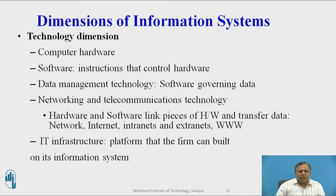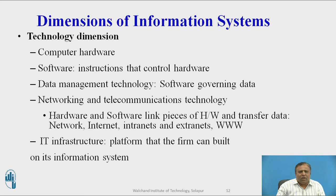The technology dimension includes: computer hardware — physical equipment used in input, processing, and output activities; software — instructions that control hardware; data management technology — software governing data; networking and telecommunication technology — hardware and software that transport data; and networks including the internet, intranets, extranets, and the worldwide web. Information technology infrastructure is the platform the firm builds its information systems on. Computer hardware consists of computers of various sizes, mobile devices, input/output/storage devices, and telecommunication devices.